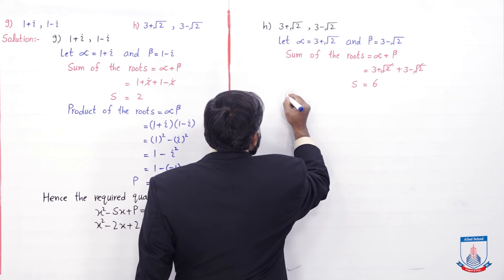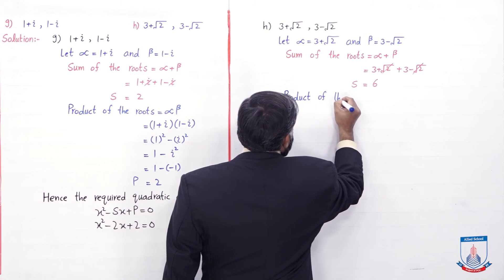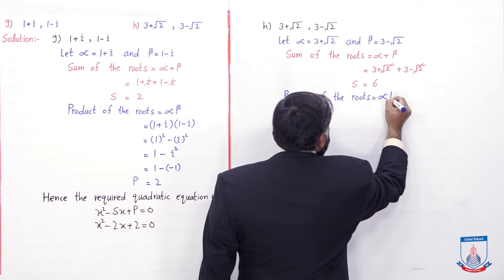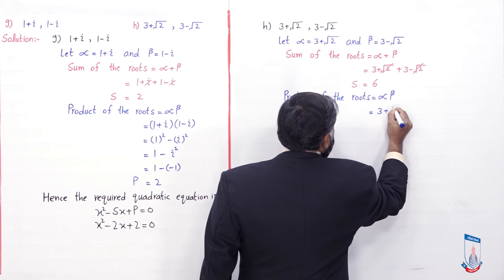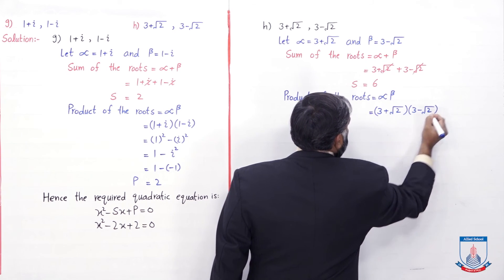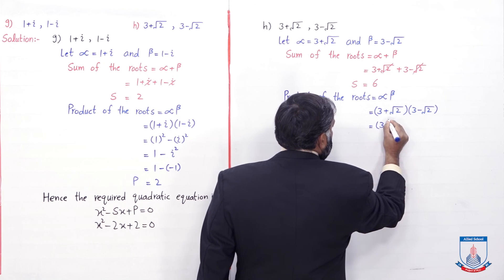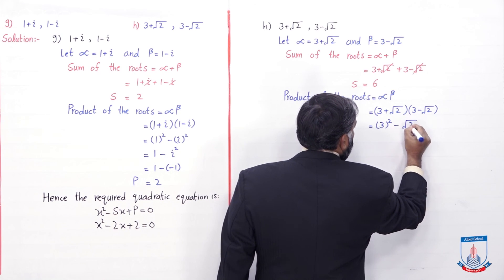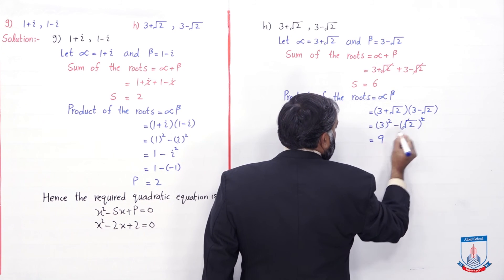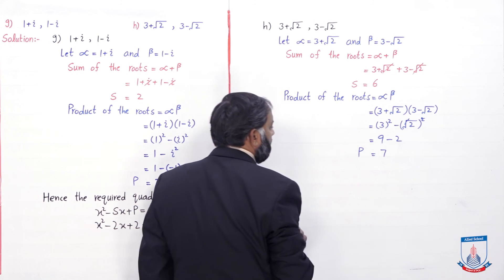Now find the product of the roots: alpha × beta = (3 + √2)(3 - √2). Apply formula (a + b)(a - b) = a² - b²: a = 3, b = √2, so 3² - (√2)² = 9 - 2 = 7. The square and square root cancel, leaving minus 2, so 9 - 2 = 7. Product of roots is 7.